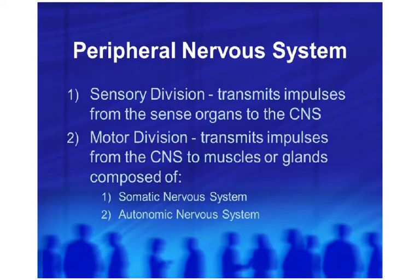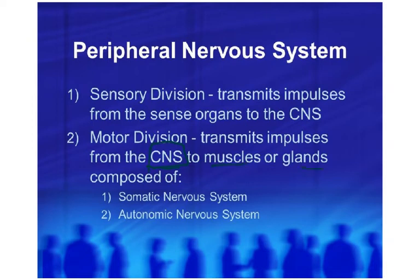The peripheral nervous system has two divisions: the sensory division and the motor division. The sensory division transmits impulses from sense organs — for example, the retina forms an image which the brain then processes. The motor division is made up of motor neurons which transmit impulses from the brain and spinal cord to muscles or glands.